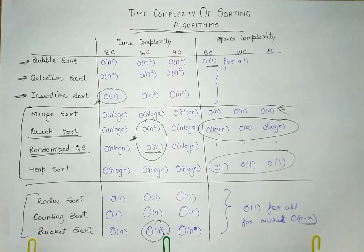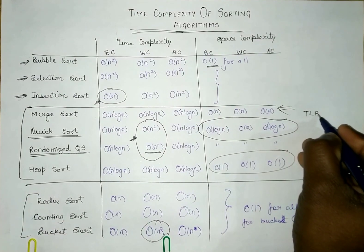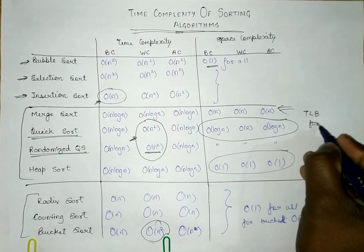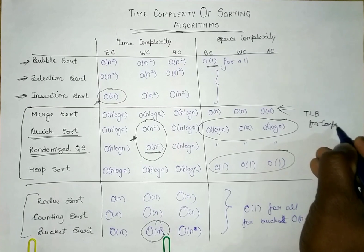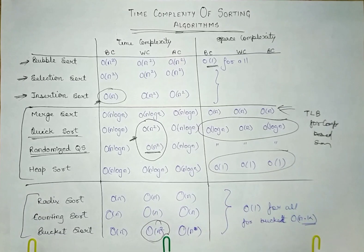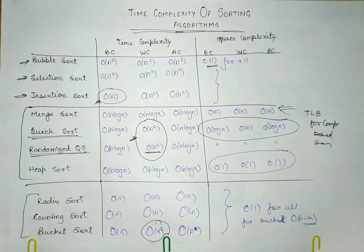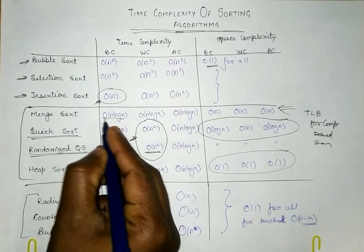Now what questions can be asked is: what is the tightest lower bound for comparison based sorting algorithm? If the question is asking about the tightest lower bound, that will be nothing but n log n because nothing is less than n log n. So the tightest lower bound is n log n.